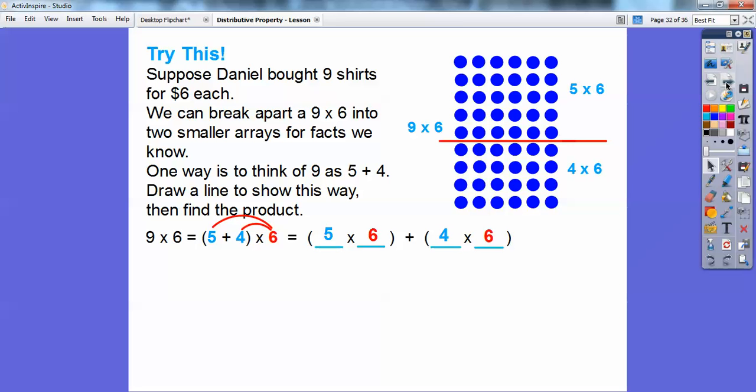So I did 6 times this blue 5, and then 6 times this blue 4, and then this plus sign represents this plus sign. And over here, here's 5 times 6 and here's 4 times 6. We're going to get 9 times 6 is going to be—well, 5 times 6 is 30, and 4 times 6 is 24.